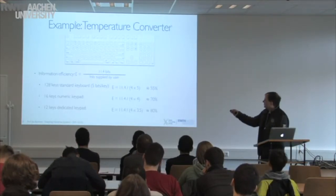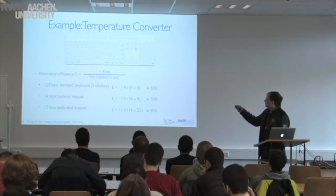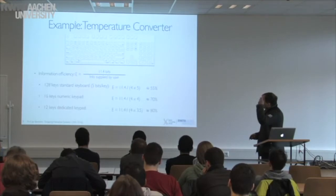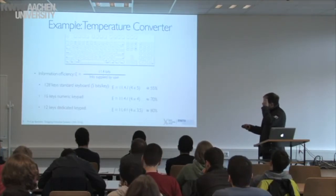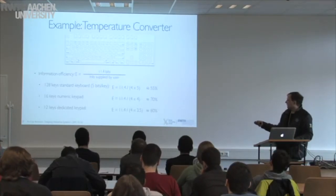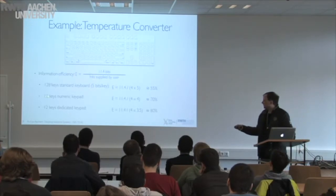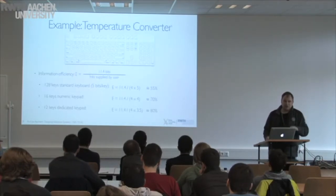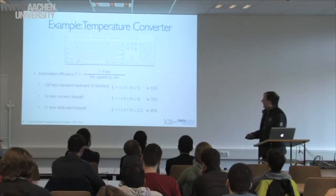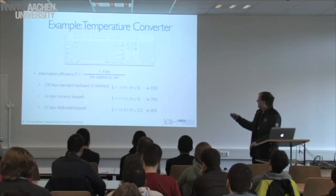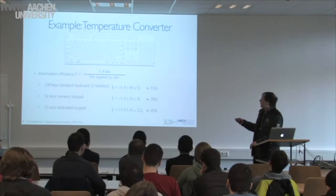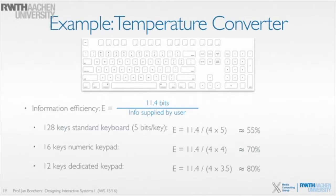If you take away the unnecessary part and only use the numerical keypad with 16 keys — say a 4-by-4 layout — then you get an information efficiency of 11.4 divided by 4 times 4 bits per key, assuming all keys are equally likely to be pressed. That's up to 70%. And if you make a dedicated keypad with only the 10 digits, the minus sign, and the decimal point — no plus key, no asterisk, no slash, no clear button — your information efficiency of the input device goes up to 80%.